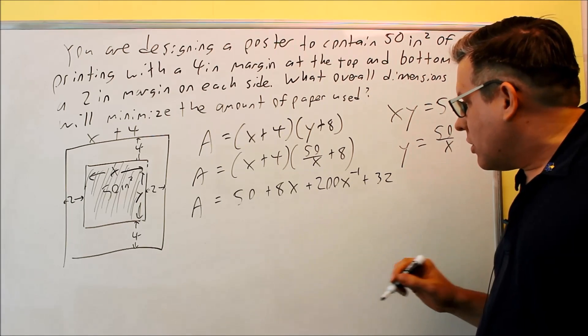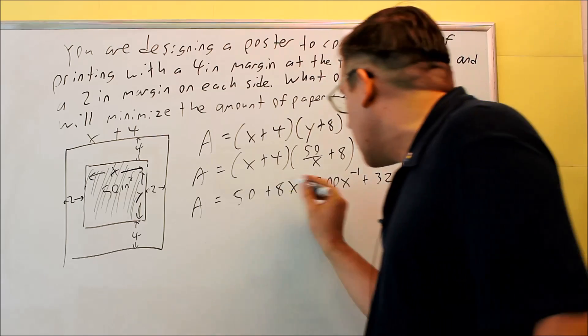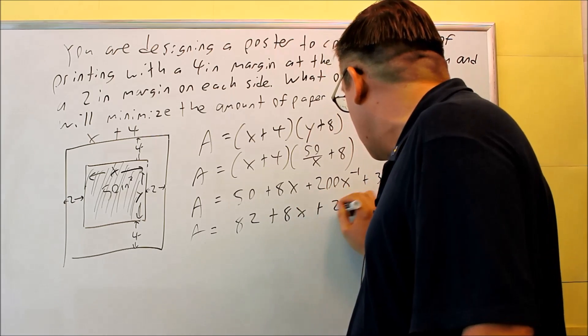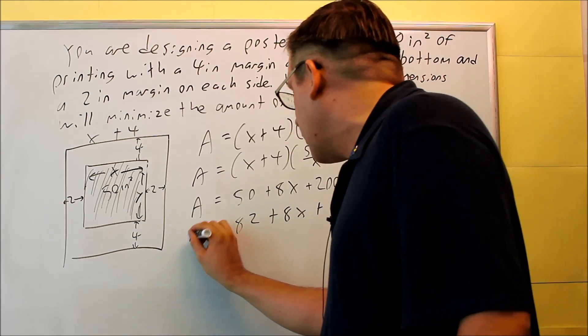Next, I'm ready to take the derivative. Of course, let me first simplify this here. So I have 82, plus 8x, 200 x to the negative 1. Now let's do the derivative.